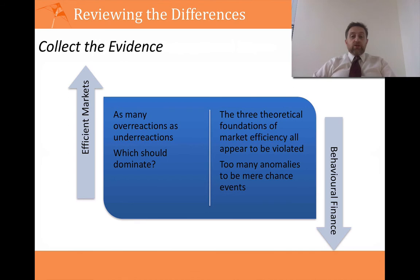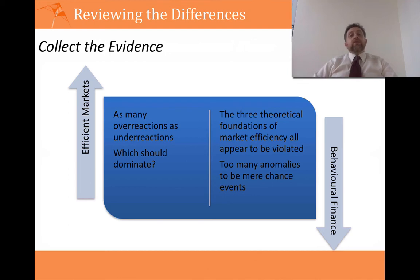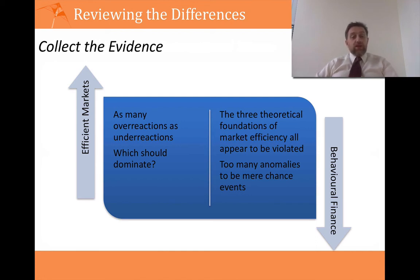However, behavioural finance argues that all three criteria for efficient markets — which I covered in a previous video — are violated in practice. Efficient markets theory says we need only one of those criteria to hold; behavioural finance argues that all three are violated, so the markets can't be efficient. They go further by saying that, while they recognise there are lots of underreaction and overreaction findings, there are just too many anomalies for it to be mere chance. The sheer body of anomalies suggests that the markets are inefficient.